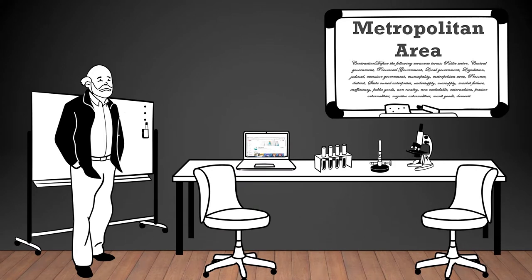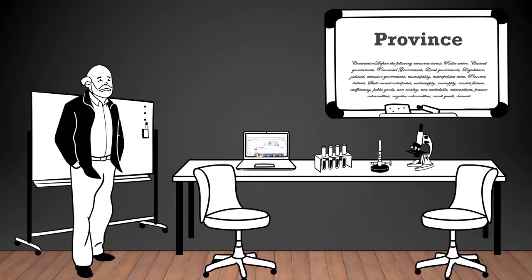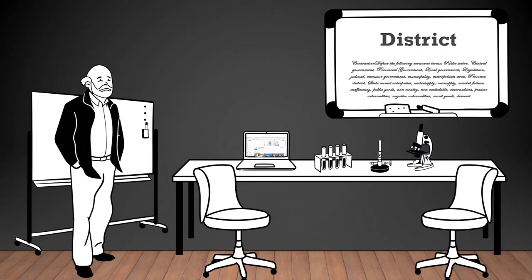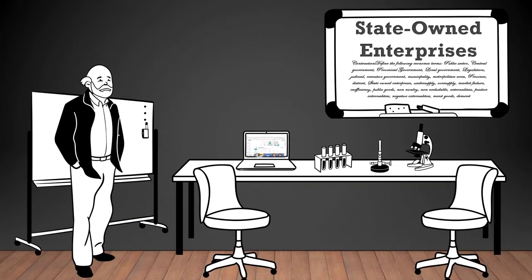Metropolitan area: a large urban region that includes a central city and its surrounding suburbs and urban areas. Province: a territorial division of a country, often with its own government and administrative structure. District: a smaller administrative division within a province or other larger administrative region. State-owned enterprises: companies and businesses that are owned and operated by the government.